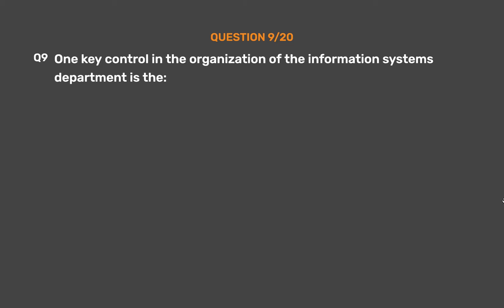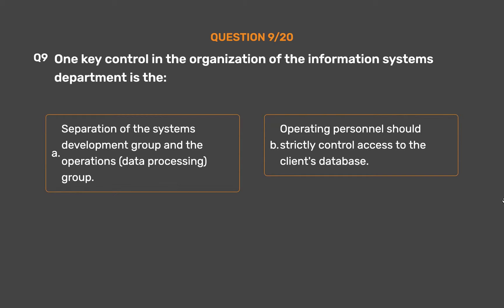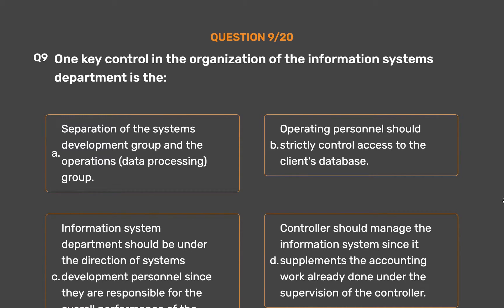Question number 9. One key control in the organization of the information systems department is: Option A: Separation of the systems development group and the operations data processing group. Option B: Operating personnel should strictly control access to the client's database. Option C: Information system department should be under the direction of systems development personnel since they are responsible for the overall performance of the system. Option D: Controller should manage the information system since it supplements the accounting work already done under the supervision of the controller. The correct answer is Option A — Separation of the systems development group and the operations data processing group.